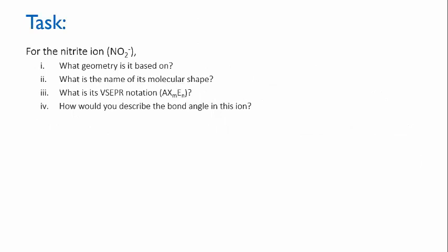Okay, so here's your task. I'd like you to think about the nitrite ion, NO2 minus. I want you to work out what geometry it's based on. What is the name of its molecular shape once you've taken the lone pairs into account? I want you to write its VSEPR notation, and I'd like you to describe the bond angle in this ion and enter the answers into the quiz.